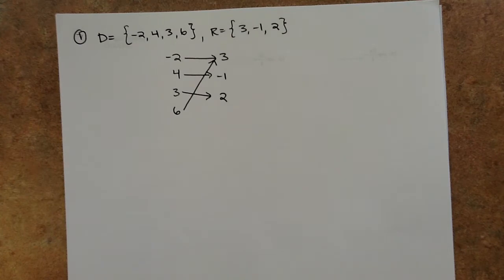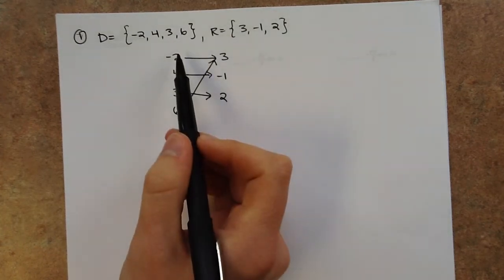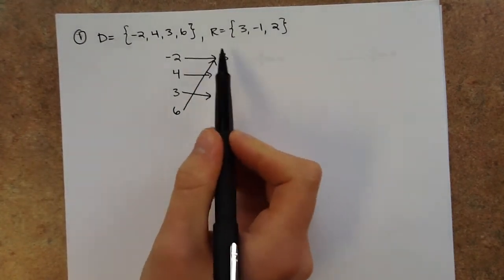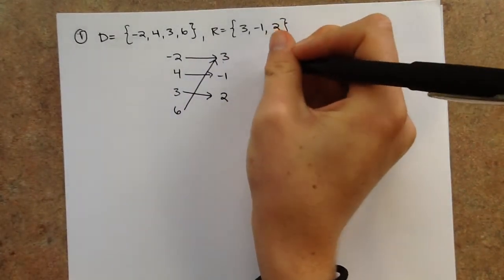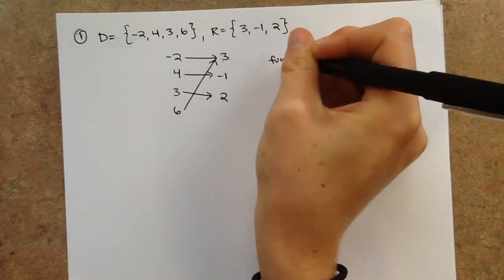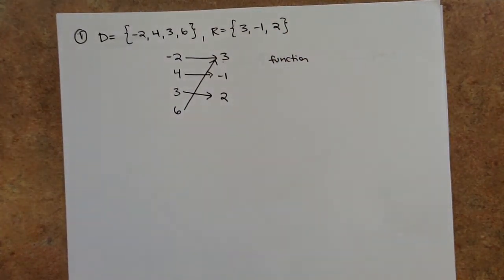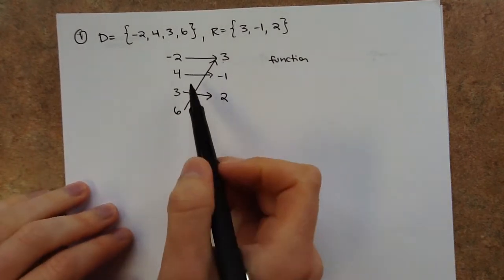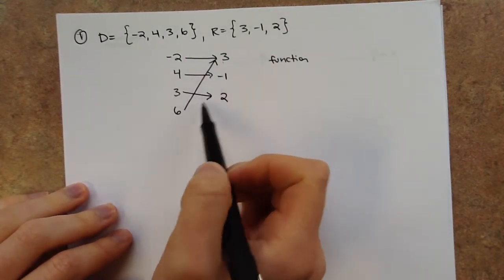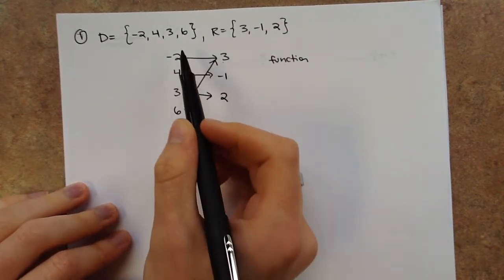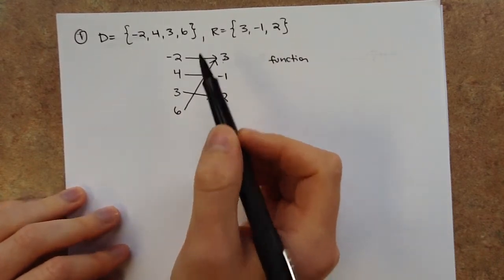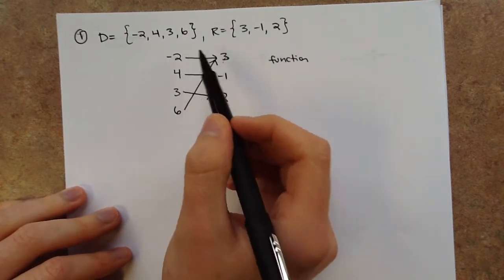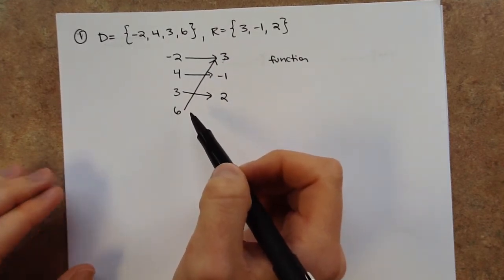Is it a function? The definition of a function says each x value goes to one and only one y value. Each x value here only goes to one y value, so it is a function. Then, since it is a function, determine if it's one-to-one, onto, both, or neither. One-to-one means a perfect one-to-one matchup: not only does each x go to only one y, but each y is matched with only one x. Here, the 3 is matched back to both negative 2 and 6, so it is not one-to-one.